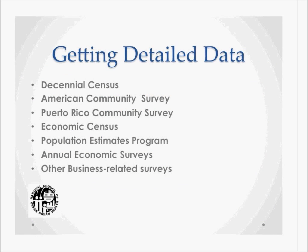Through American FactFinder, you can access data from several Census Bureau collection products, including the Decennial Census, American Community Survey, Puerto Rico Community Survey, the Economic Census, the Population Estimates Program, the Annual Economic Survey, and other business-related surveys. The Economic Census is collected every five years and gives a snapshot of the U.S.'s economic status. The Population Estimates Program provides data in the interim of the Census, allowing for projections on population. The Economic Survey is an interim survey for the Economic Census.